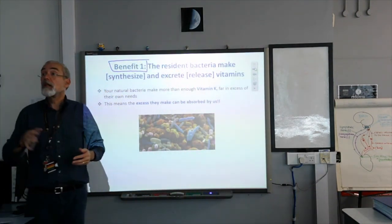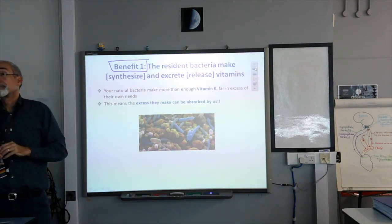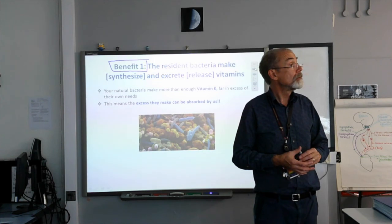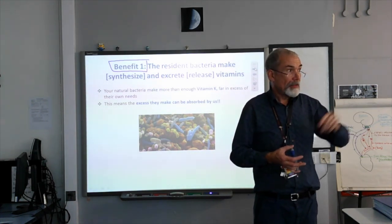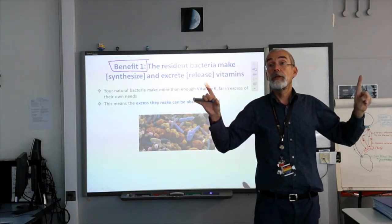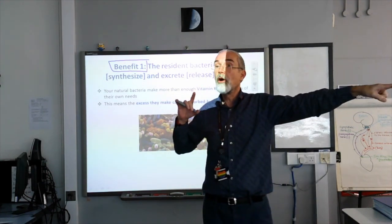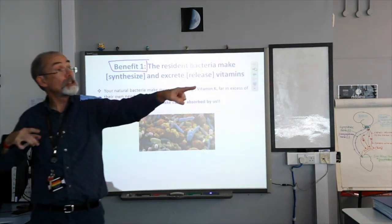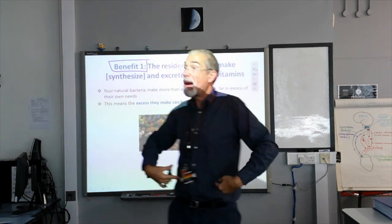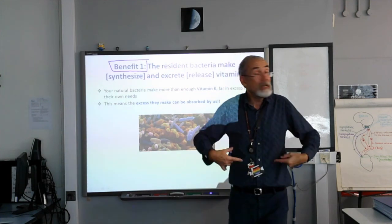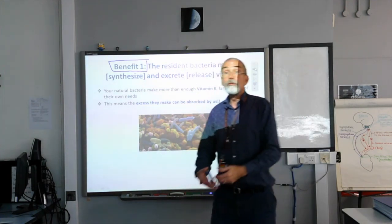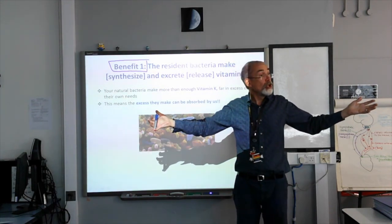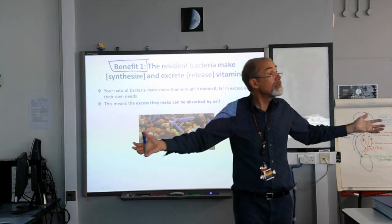A lot of the bacteria in your gut — in your large intestine right now — are making vitamin K. Does anybody know what vitamin K is critical for? Clotting of the blood. We get a lot of our vitamin K from the bacteria in our large intestine that make it for themselves, but they make a gigantic amount of it, which means the excess that they make we absorb. It's a win-win — they get food, the right temperature, a nice place to live. They make vitamin K; any excess we can have for free.